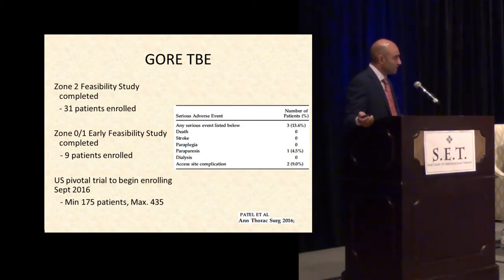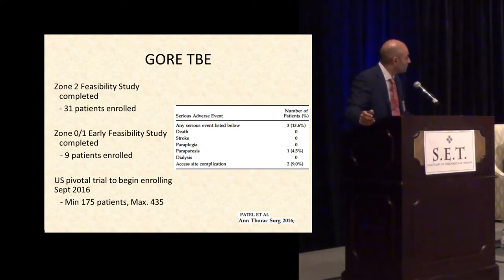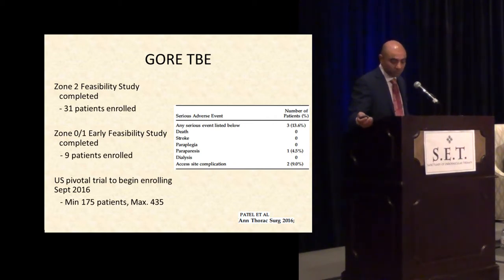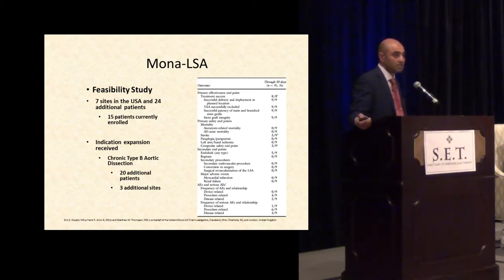Initial data from the single-branch grafts: 31 patients were enrolled in the feasibility study for zone 2, and about 9 are now in zone 0. For the Gore graft, the PIVOT trial has begun. One of the problems seen early was paraparesis, and there have also been some access site complications. Cerebrovascular accidents are something that plague all devices and all approaches in the arch and ascending aorta. The Medtronic graft has gone through feasibility with 15 patients currently enrolled. Minor strokes — and I would argue there's really almost nothing like a minor stroke — have been the bugaboo, as you're manipulating large sheaths and grafts and wires in the arch in older patients who have a lot of disease.